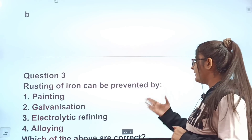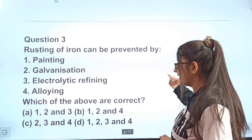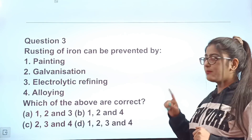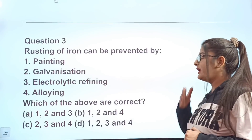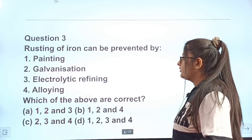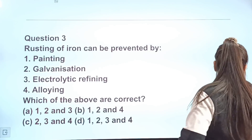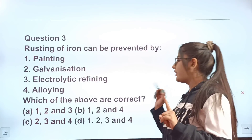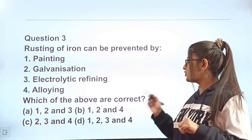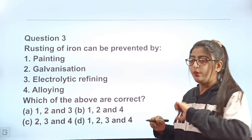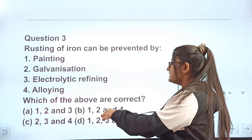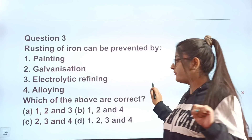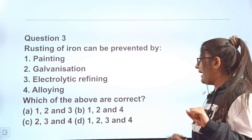Question 3: Rusting of iron can be prevented by? Option A includes painting. Option B includes painting, galvanization, and alloying. Option C includes galvanization, electrolytic refining, and alloying. Option D includes all four — painting, galvanization, electrolytic refining, and alloying. According to you, which option is correct?